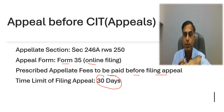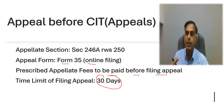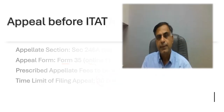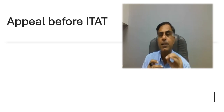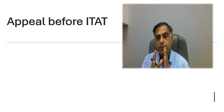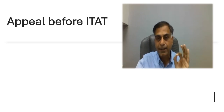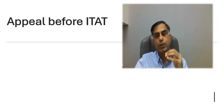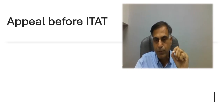A question may come — can there be condonation for genuine reasons? Yes, there can be a condonation request which may be filed by the Assessee for genuine reasons if there is a delay. After CIT Appeal, the second authority who can entertain an appeal would be ITAT. If CIT Appeal does not decide the case in your favour, then you can file an appeal before ITAT.